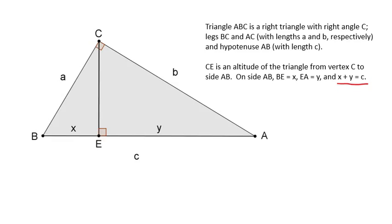We've got the whole triangle ABC, but then we've got these two smaller triangles: triangle BCE and triangle CEA. So we have three triangles total.